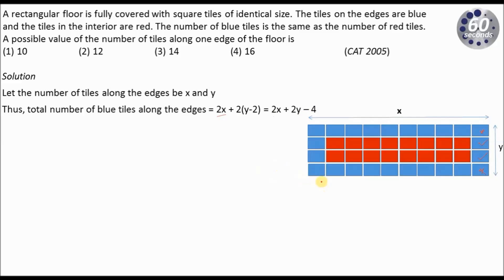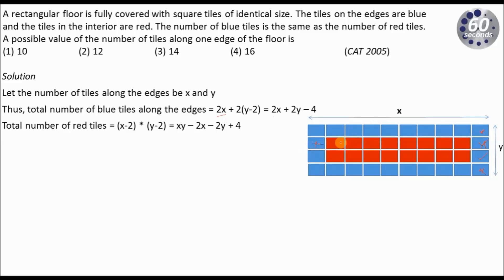Similarly, I can calculate the number of red tiles. Along the interior edge I will get X minus 2 tiles, because the corner tiles have already been added in the blue tiles. So if the length is X, I get X minus 2 red tiles along one edge and Y minus 2 tiles along the other edge. On simplification I get XY minus 2X minus 2Y plus 4.